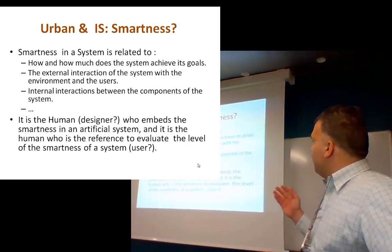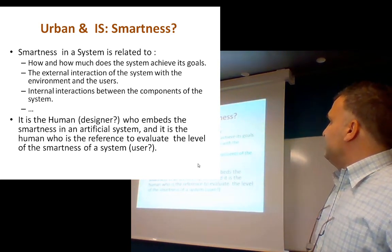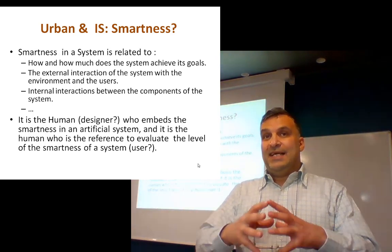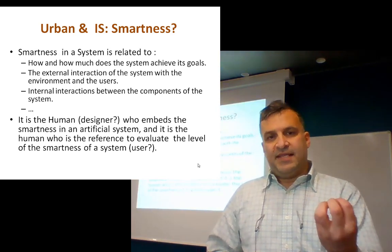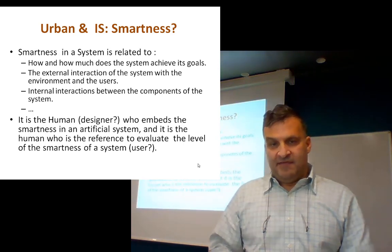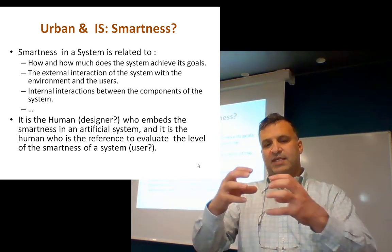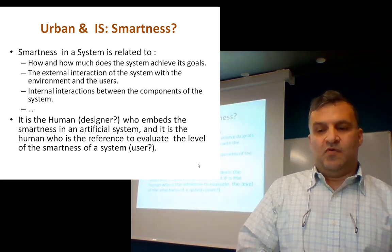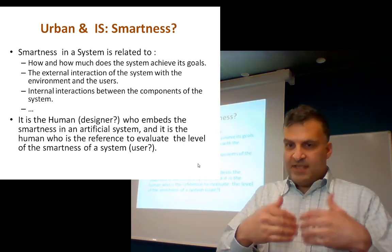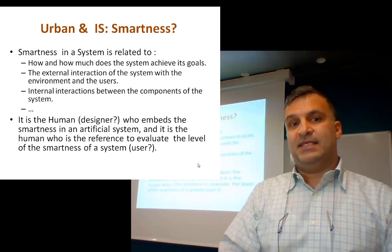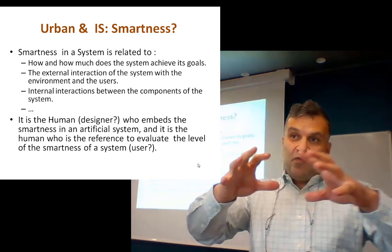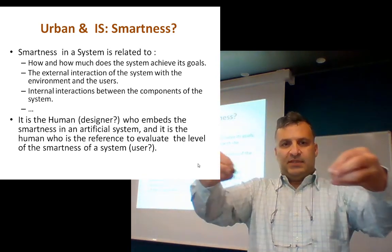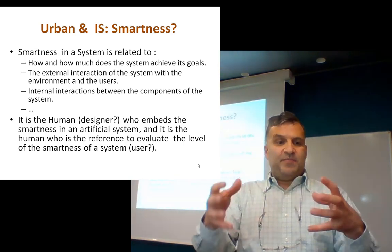So if we talk about urban information systems and smartness, most of the time we talk about smartness in a system. We cannot discover the smartness of an object if it is not in a context, if we don't know the interaction between this object and other objects, and the internal interaction of the components of this object. For this reason, it is better to talk about smartness in a system — that means we talk about components in a system and the relationships between them.